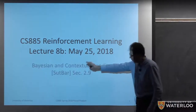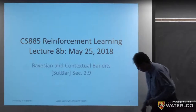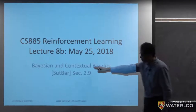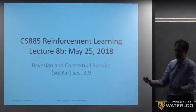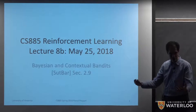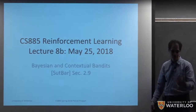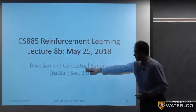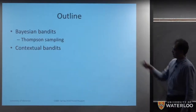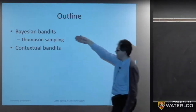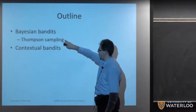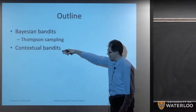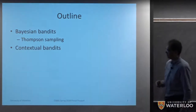Another important type of bandit is contextual bandits. These are bandits where we take into account the context so that we can make more informed decisions. In practice, in industrial settings, these are the ones that tend to be used. For these slides, I will introduce Bayesian bandits and in particular one algorithm known as Thompson sampling, and then after that we'll talk about contextual bandits.